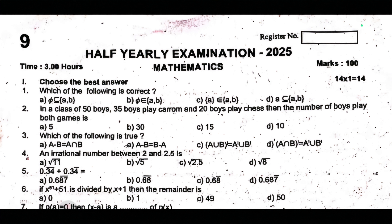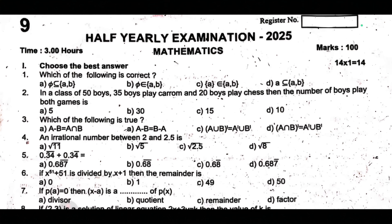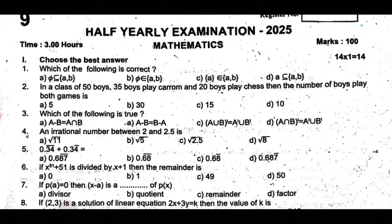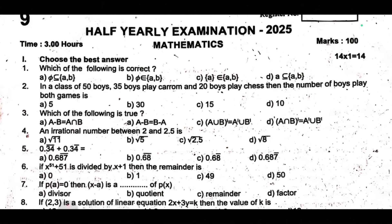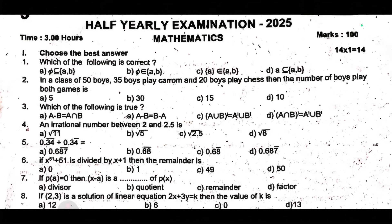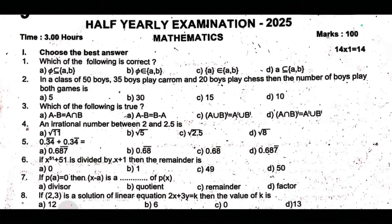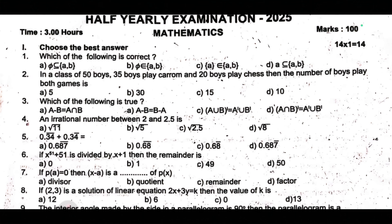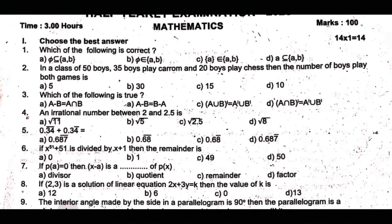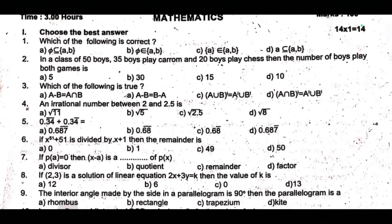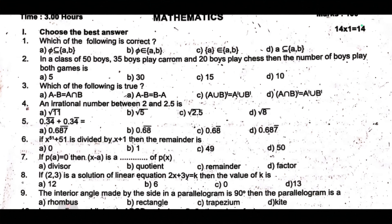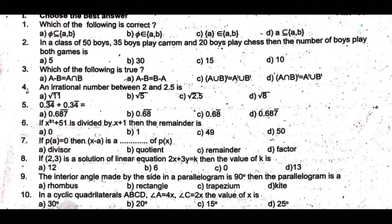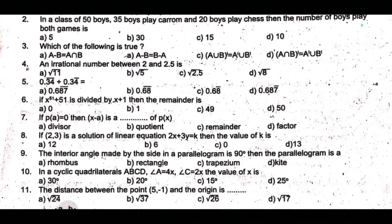Then the number of boys play both games is dash. Third one, which of the following is true? Fourth one, an irrational number between 2 and 2.5 is dash. Fifth one, 0.34 bar plus 0.34 bar equal to dash. Sixth one, if x to the power of 51 plus 51 is divided by x plus 1, then the remainder is dash.